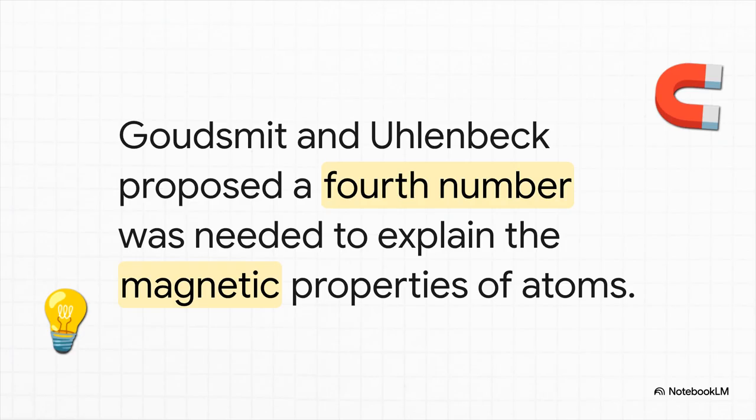You see, early on, experiments showed that electrons behave like tiny spinning magnets. But the first three quantum numbers couldn't explain this at all. So, two graduate students, Goudsmit and Uhlenbeck, proposed that there had to be a fourth number to describe this built-in magnetic property.